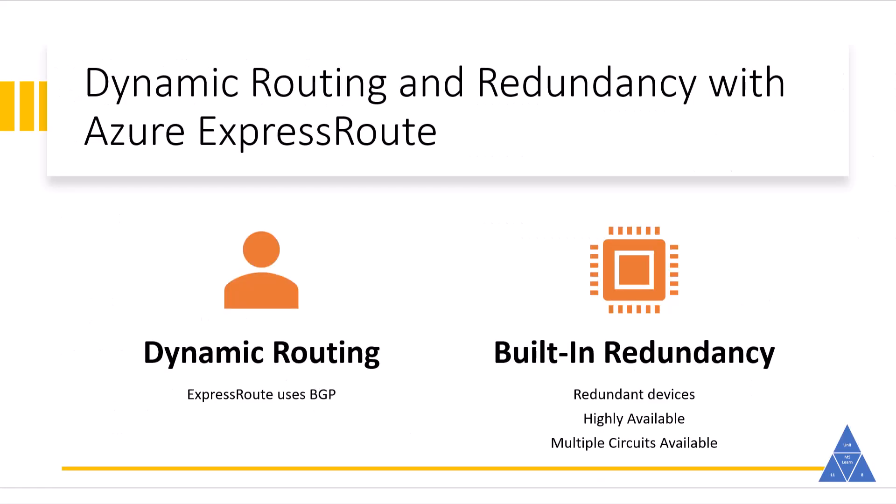Dynamic routing: ExpressRoute uses BGP, which is used to exchange routes between on-premises networks and resources running in Azure. This protocol enables dynamic routing between your on-premises network and services running in the Microsoft cloud. Built-in redundancy: each connectivity provider uses redundant devices to ensure that connections established within Microsoft are highly available, and you can configure multiple circuits to complement this feature.